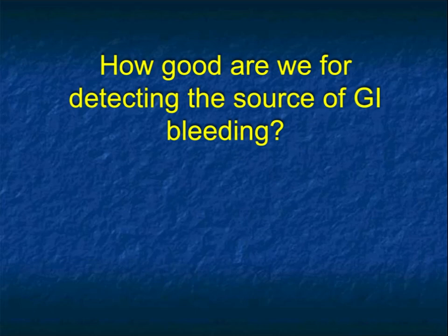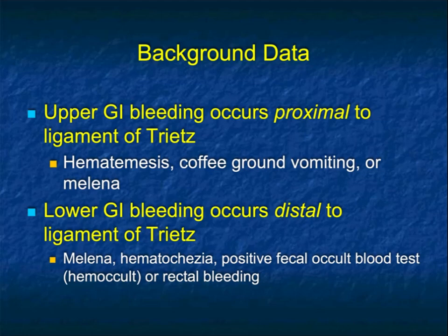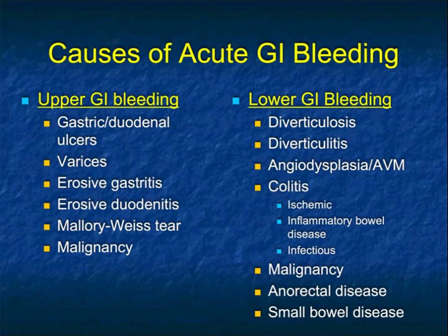One topic is GI bleeding. We've had talks before on GI bleeding, and you tend to focus on small or large bowel — I'm going to focus on everything coming down from the stomach. Acute GI bleeding is a common medical emergency with a high number of ER visits; mortality is as high as 40% in patients with hemodynamic instability. Most bleeds will stop spontaneously but will often recur, especially in diverticular disease. Upper GI bleeding means proximal to the ligament of Treitz — causes include ulcer disease, varices, gastritis, duodenitis, and malignancy. Lower GI bleeding includes diverticulosis, angiodysplasia of the colon and small bowel, colitis, occult malignancy, and small bowel disease.